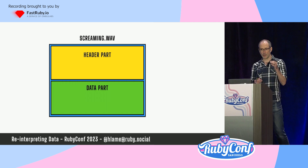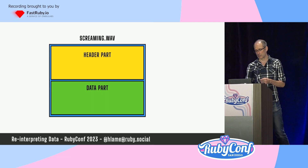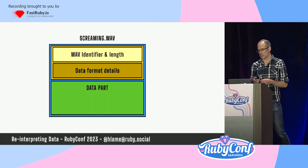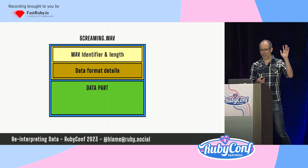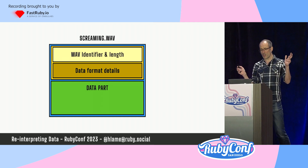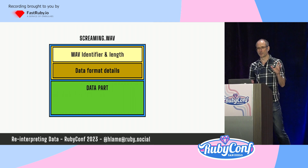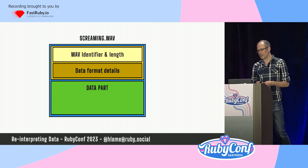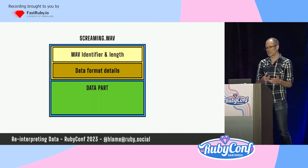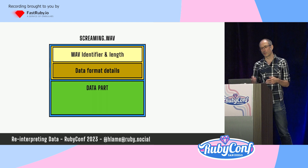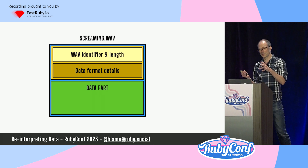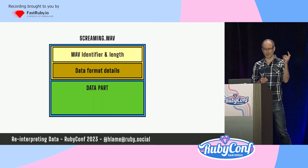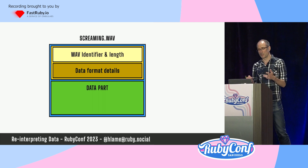WAV files are made up of a header part and a data part. The data part is raw bytes representing the digital representation of the sound wave — just a stream of numbers. The header part tells us how to interpret the data. It's split in two: the first part says 'I'm a WAV file, I'm this long.' The second part tells audio software how to interpret the data: how many channels, mono or stereo, samples per second, bits per sample. More channels, more samples, more bits per sample means more accurate sound but much more data.